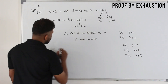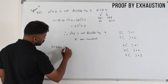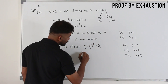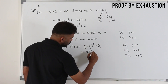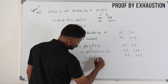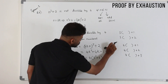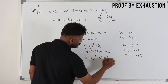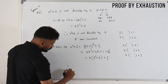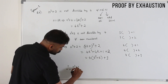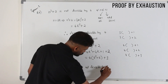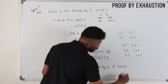Now take the odd case: n = 2k + 1. So n² + 2 = (2k + 1)² + 2. Expanding using (a + b)² = a² + 2ab + b²: 4k² + 4k + 1 + 2. You can take 4 from the first two terms: 4(k² + k) + 3, which is 4 times something plus 3. Therefore n² + 2 is not divisible by 4 for all n belonging to the set of all natural numbers.